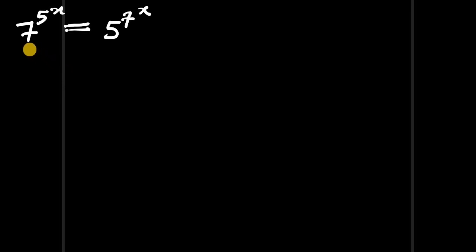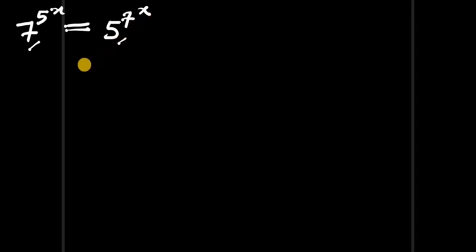Hello. In this video we have 7 to the power of 5 to the power of x equals 5 to the power of 7 to the power of x, and we have to find the value of x. We have a solution.